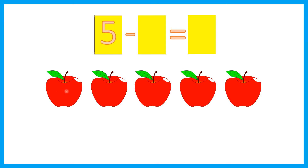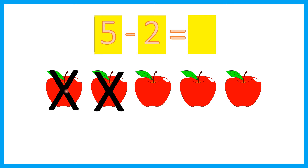Here we have 5 apples, and then we are going to take away 2. So let's cross out 2 apples. 1, 2. How many left? 1, 2, 3. Three.